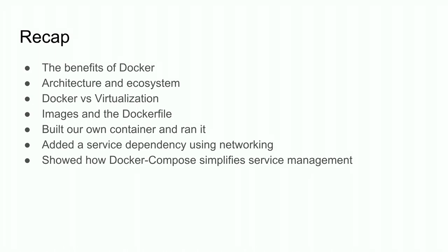A quick recap: we talked about the benefits of Docker and gave a brief introduction to the architecture and ecosystem. We talked about the CLI, the Docker daemon, how the local host manages images and containers through the daemon. We talked about Docker Hub — the public and private repository of images. We briefly covered Docker versus virtualization: Docker is much more lightweight, usually one process per container, with a smaller memory footprint. We built our own container using a Dockerfile and ran it with port publishing. We added a service dependency — Redis — and showed how to do Docker networking.